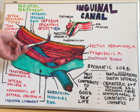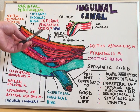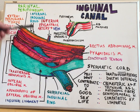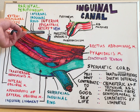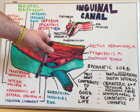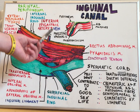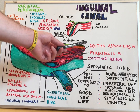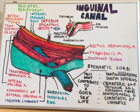The inferior epigastric artery and vein serve as an important clinical landmark allowing a surgeon to determine the hernia type: an indirect inguinal hernia occurs lateral to the inferior epigastric artery, while a direct hernia occurs medially to the inferior epigastric artery, slightly lateral to the rectus abdominis and pyramidalis muscles. And that's the inguinal canal.